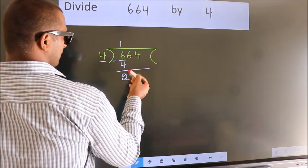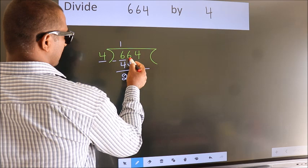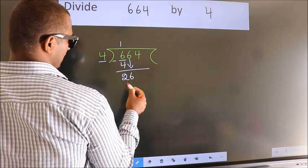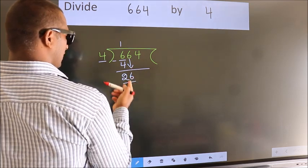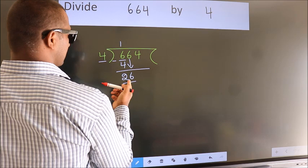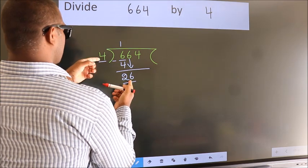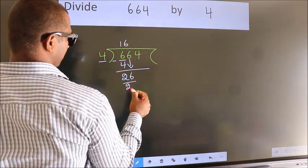After this, bring down the beside number. So, 6 down. So, 26. A number close to 26 in 4 table is 4, 6, 24.